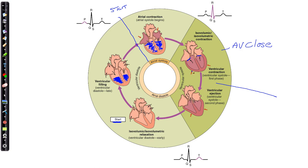As we continue to build pressure within the ventricles, eventually the pressure in the ventricles gets higher than the pressure in the great vessels — the aorta and the pulmonary artery. When the ventricular pressure exceeds the aortic or pulmonary artery pressure, the semilunar valves open and we eject blood out into the arteries.